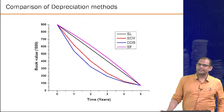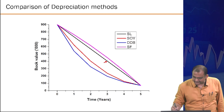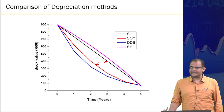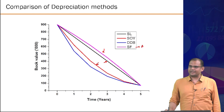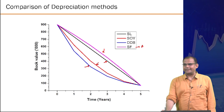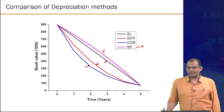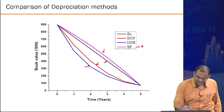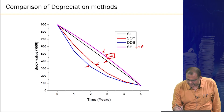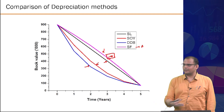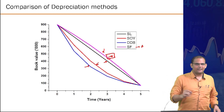Plotting all book values over time: the black line is straight line depreciation, the red line is sum of years digits, the pink line is the sinking fund method, and the blue line is DDB. From the perspective of maximizing present worth, DDB (blue) is most favorable as it has the steepest early decline. The sinking fund method performs worse than even straight line and is almost never used in practice.